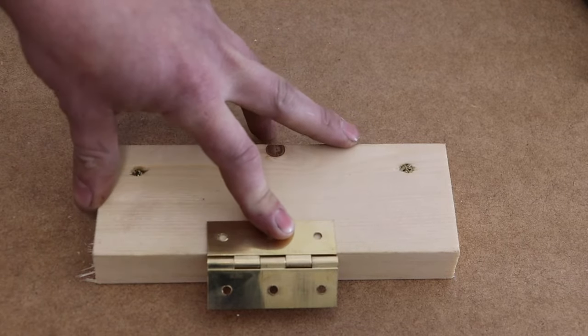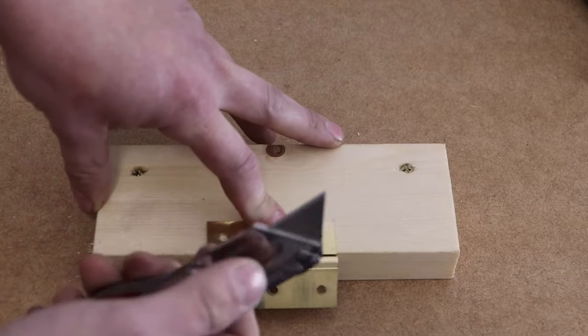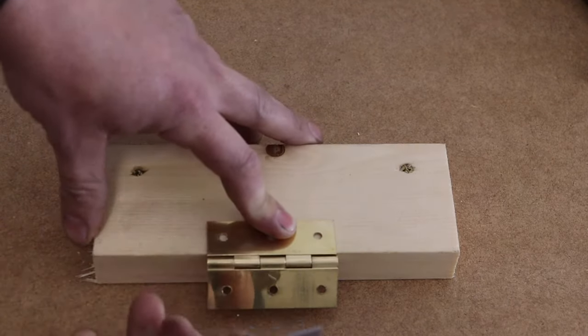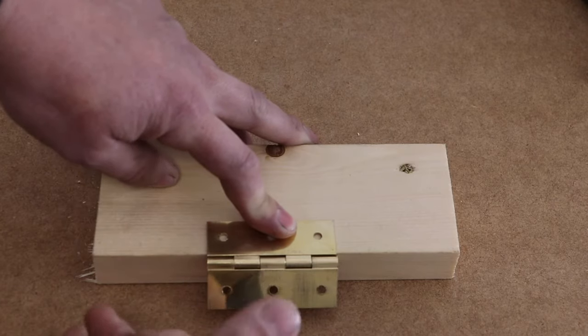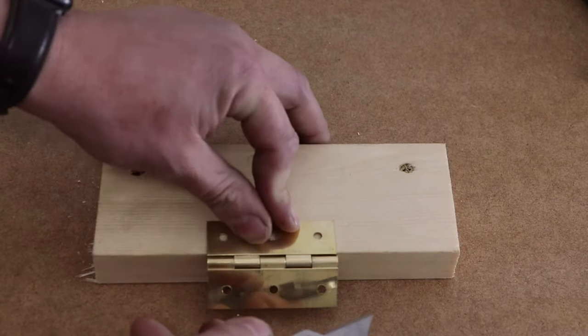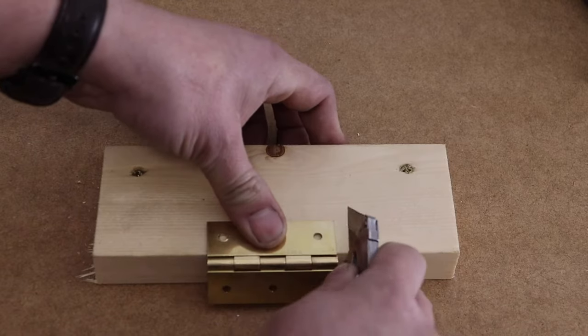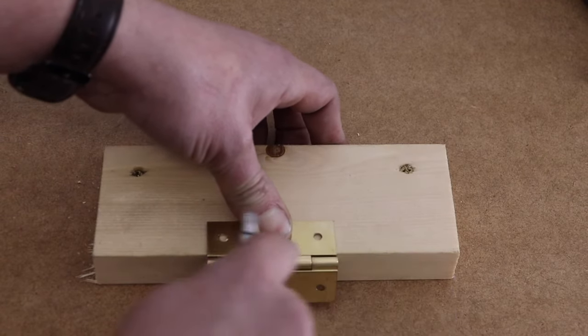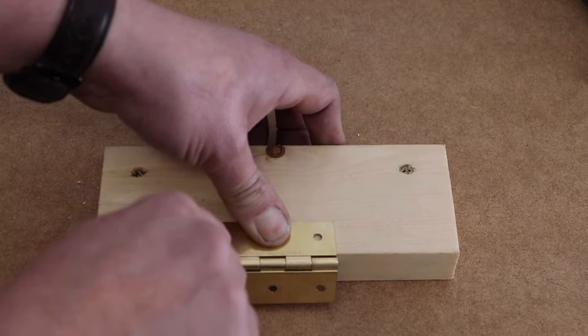So now we've got that in position, we want to take our knife. Now make sure this is a sharp blade. If you're using a Stanley knife like this, make sure it's a new blade, or if you've got a marking knife, make sure you get that nice and sharp. But what we want to do is just mark around our hinge. Now nice and gently to start with, just sever them fibers.